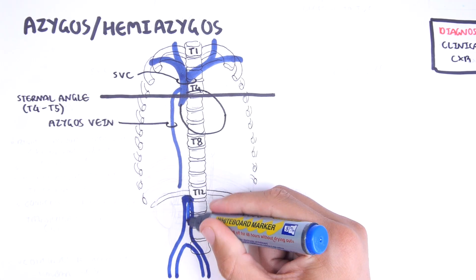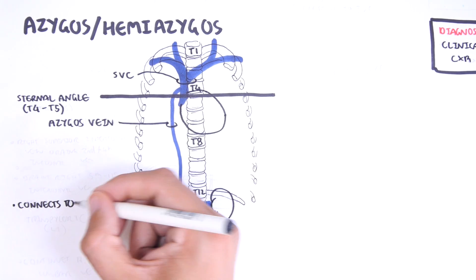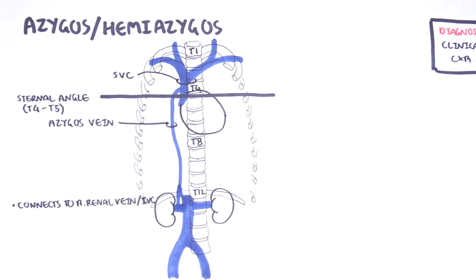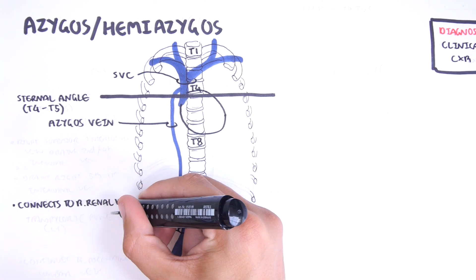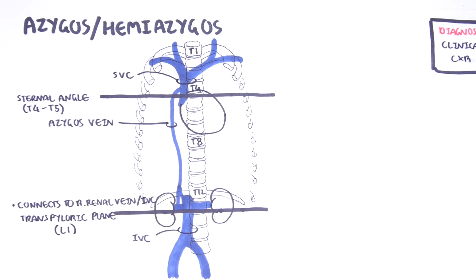The azygos vein is a connection between the superior vena cava and the inferior vena cava slash right renal vein. The hilum of the kidney is situated at another imaginary line called the transpyloric plane, which is the L1 vertebral level. The azygos vein starts at the T12 to L2 vertebral level typically and then drains upward.